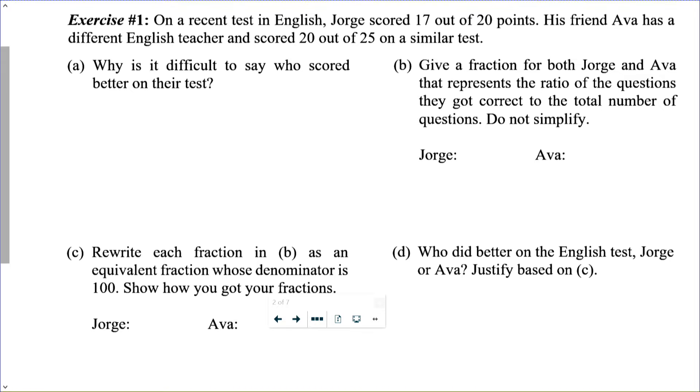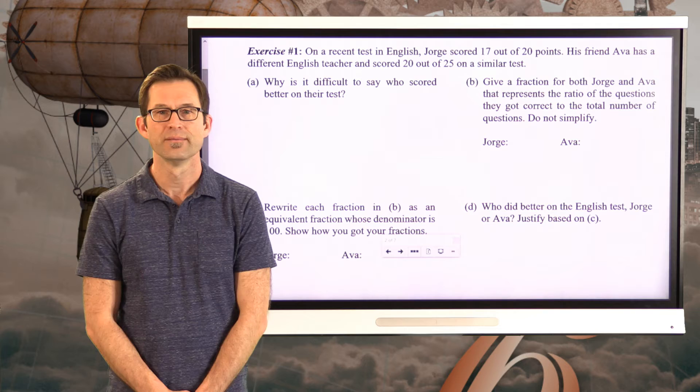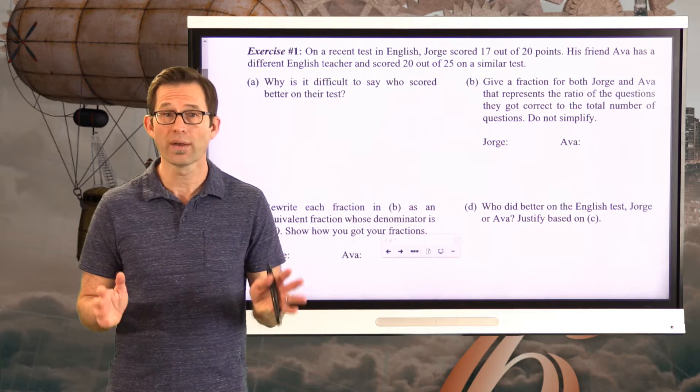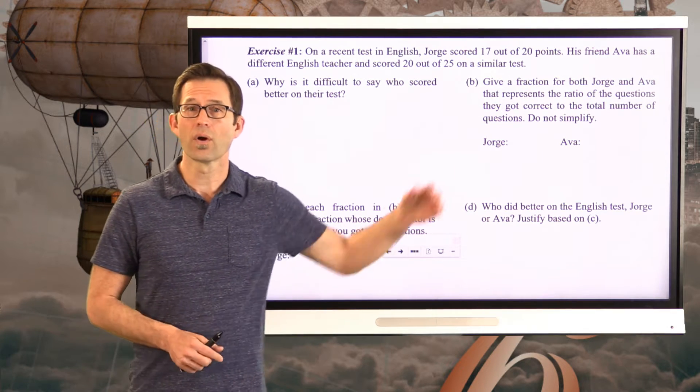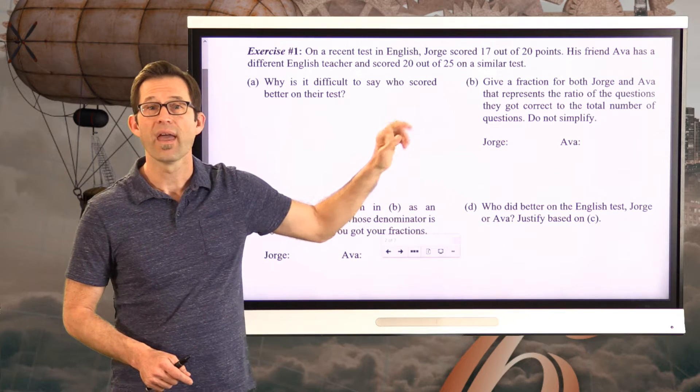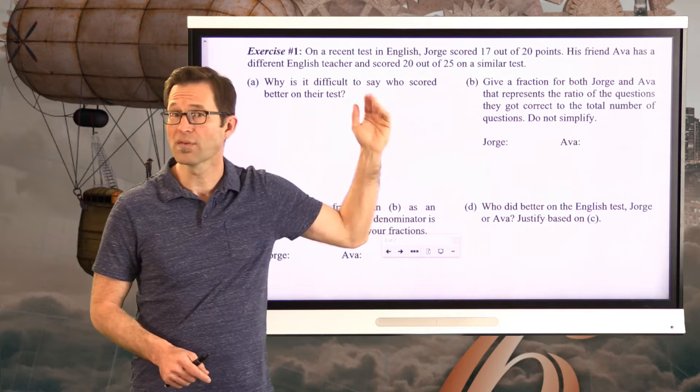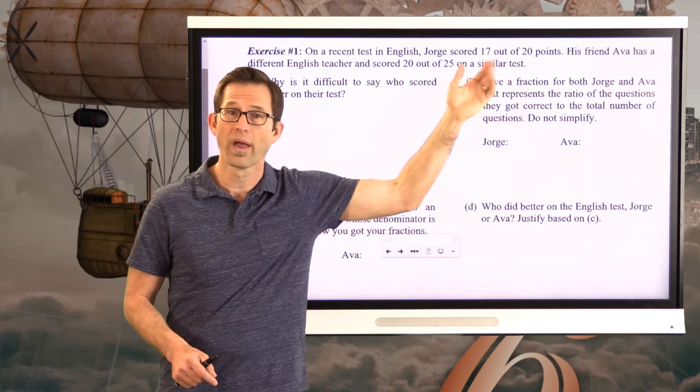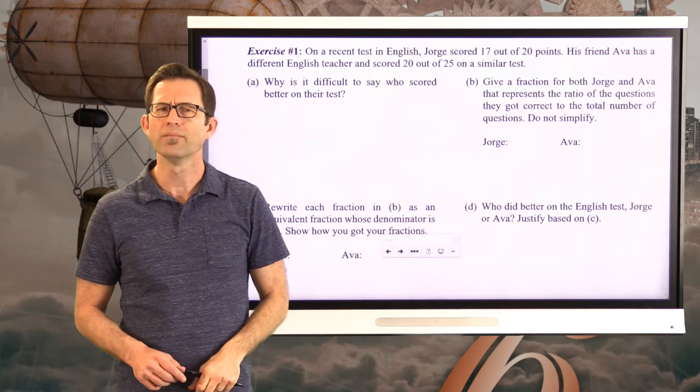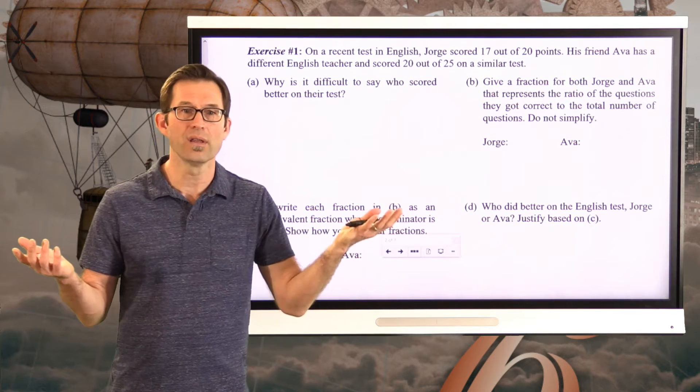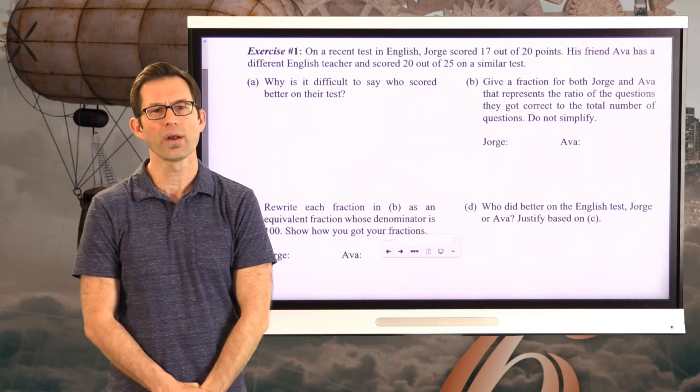On a recent test in English, Jorge scored 17 out of 20 points. His friend Ava has a different English teacher and scored 20 out of 25 points on a similar test. Letter A, why is it difficult to say who scored better on their test? This is actually a really important question. Jorge scores 17 out of 20, Ava scores 20 out of 25. So Ava scored more points. She got 20. Jorge scored 17. So why can't we just basically say Ava did better? Pause the video now and try to write something down.